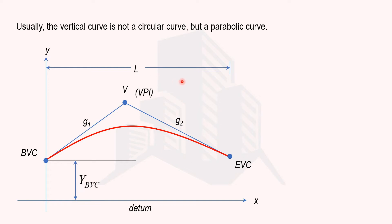When we derive the formula for the vertical curve, we want a general equation that gives the reduced level at any particular point. Since the change is in the vertical plane, we are talking about reduced levels — unlike horizontal curves where we discussed horizontal distances. The general equation will include variables that can tell us the reduced level at any point on the vertical curve.